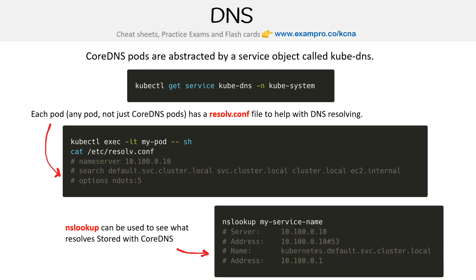Another really useful tool is using nslookup. Name server lookup is a way that we can discover or see where things resolve. Remember, I said there's a service registry that contains a service name and an IP address. So we could dump an IP address in here, and then it would hit CoreDNS to be like, what did you find? And this is what I found.